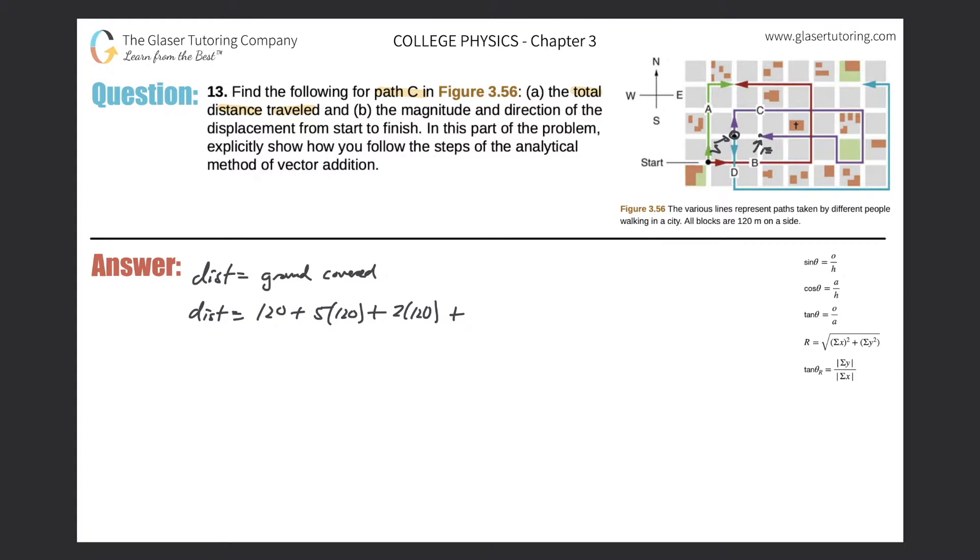That would be 2 times 120. Back to the picture, then I travel west one block, so that's 120. Plus I travel north one block, that's 120.